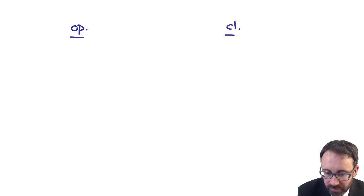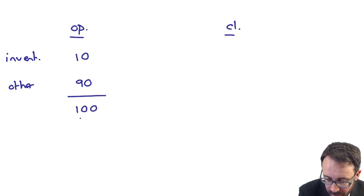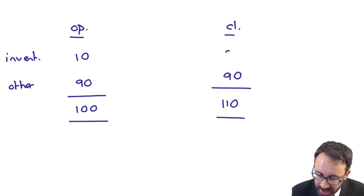Everything else is there at 90, so that gives me my 100. The closing was there as 110 wasn't it? The others still are at 90. If that's the case, the inventory must be there at 20.